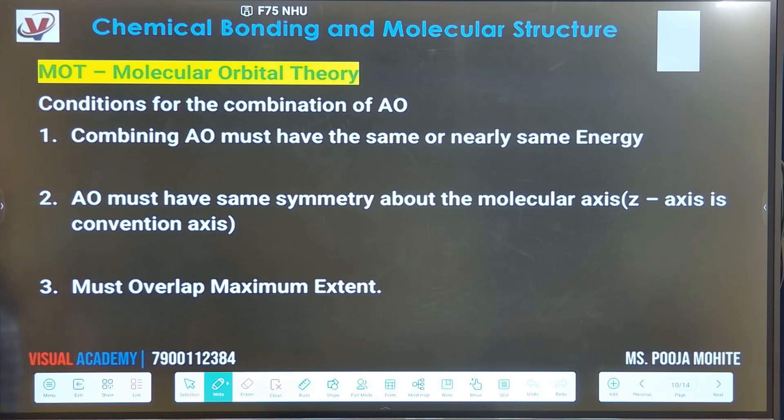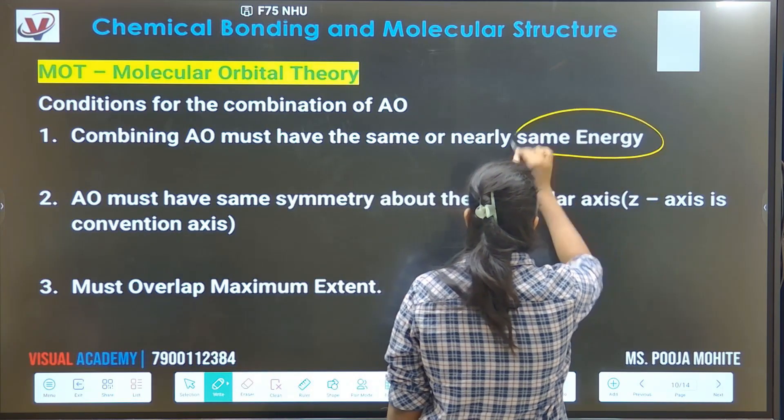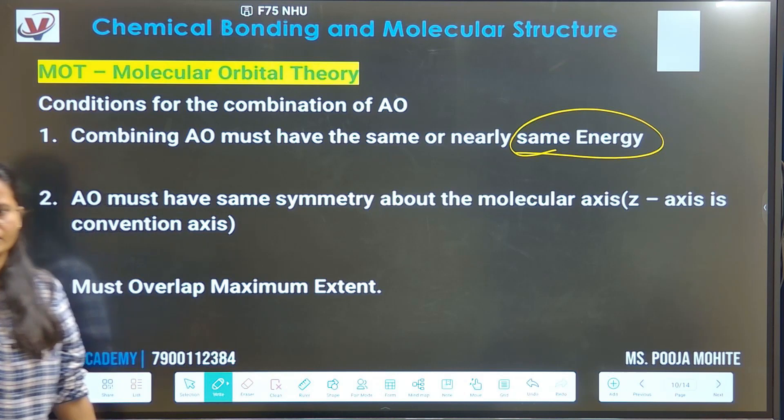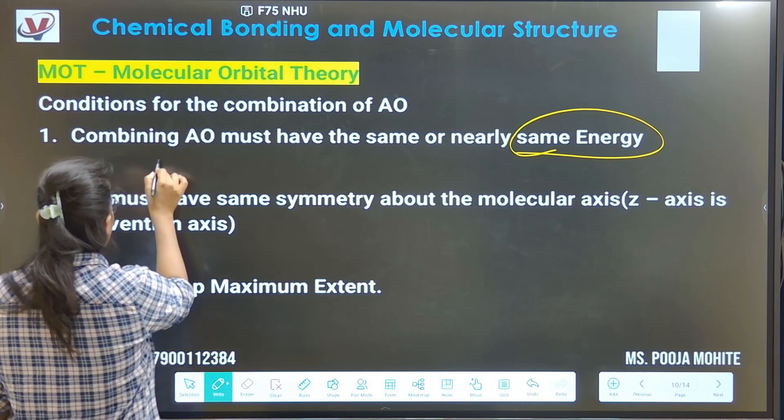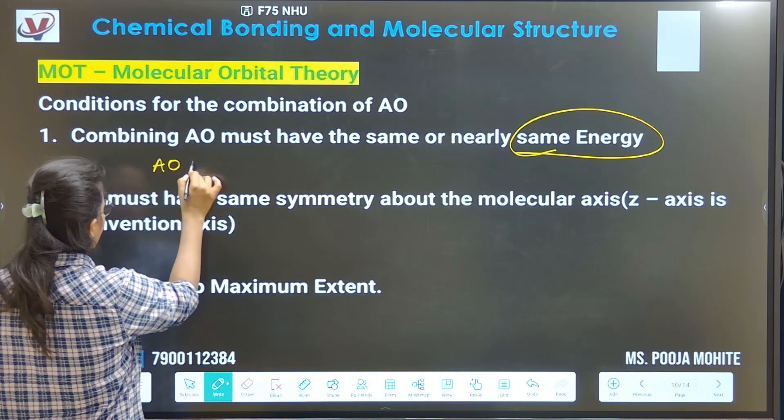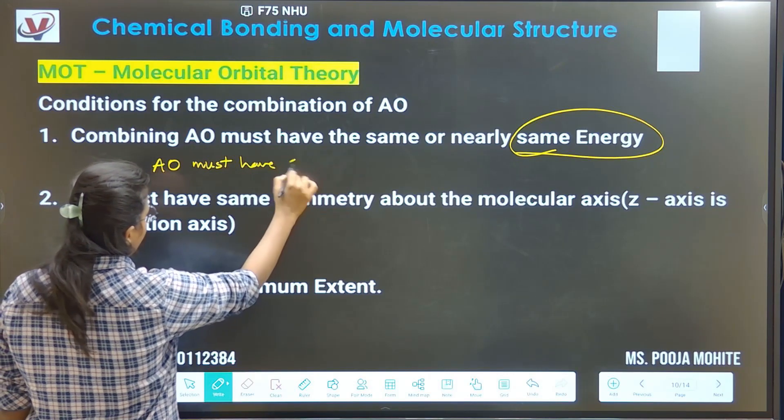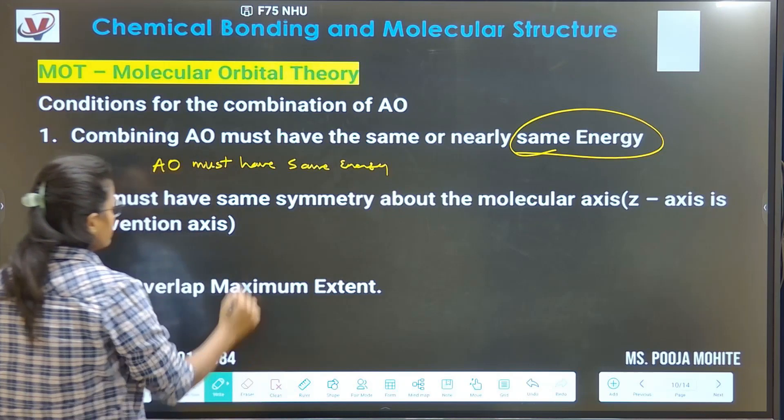The first point means same energy point. You apply N plus Nb. So you will just write down one point: AO must have same energy. So the first point is same energy condition.